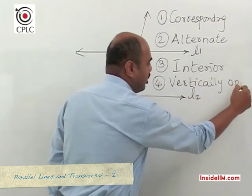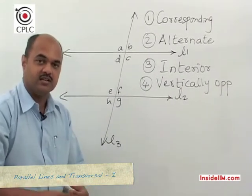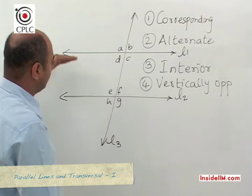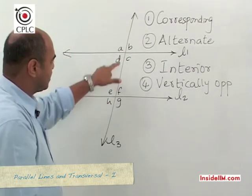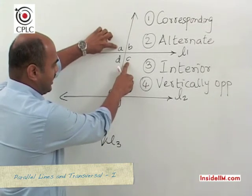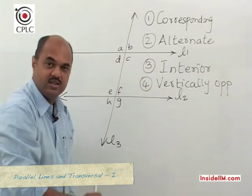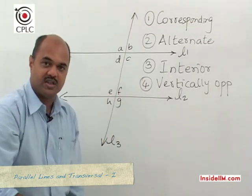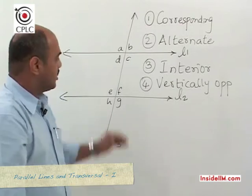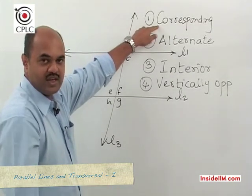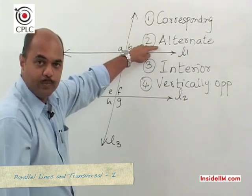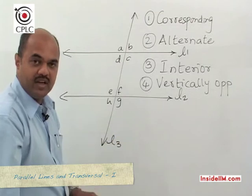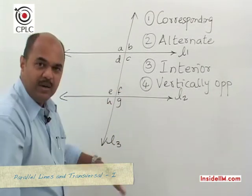The fourth type is vertically opposite angles, which are always equal whenever two straight lines intersect. Looking at L1 and L3 intersecting, A and C are vertically opposite, and B and D are vertically opposite — they are always equal. Similarly, E and G are vertically opposite angles. To summarize: corresponding angles — four pairs, equal; alternate angles — two pairs, equal; interior angles — two pairs, supplementary; vertically opposite — four pairs, equal.